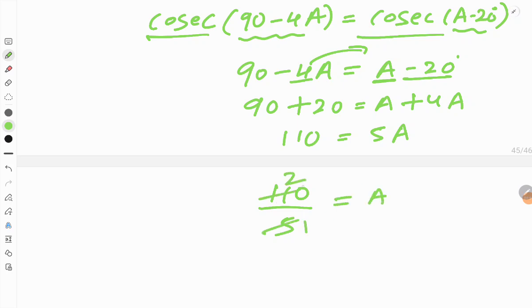5 goes into 110 twenty-two times, that means A equals 22 degrees. This is all about the fourth and fifth problems. Next we'll look at the sixth problem.